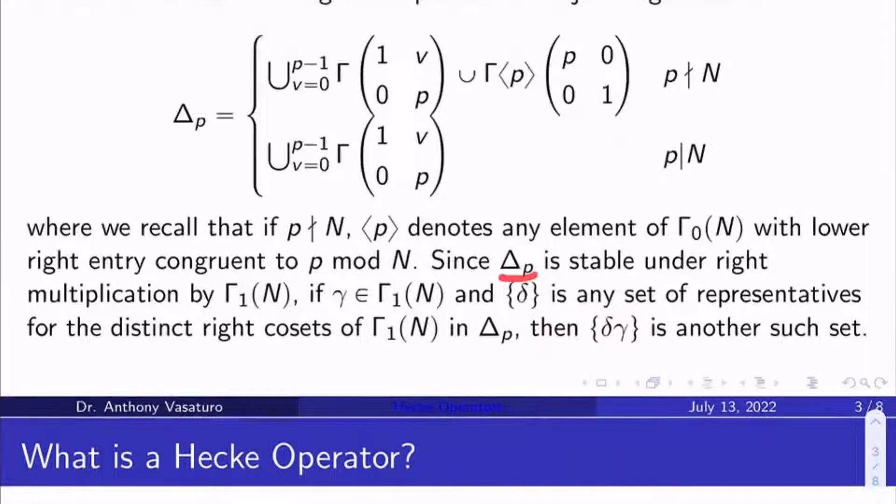Now, since delta sub p is stable under right multiplication by gamma sub 1 of n, if gamma is in gamma sub 1 of n, and if the set of a bunch of deltas is any set of representatives for the distinct right cosets of gamma sub 1 of n in delta p, then the set of all the delta gammas is another such set. In other words, sets of coset representatives don't change when you multiply them on the right by a fixed element of gamma sub 1 of n.